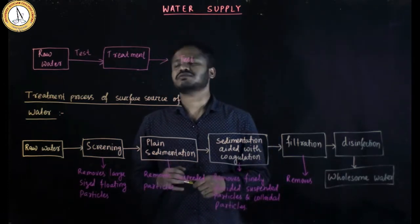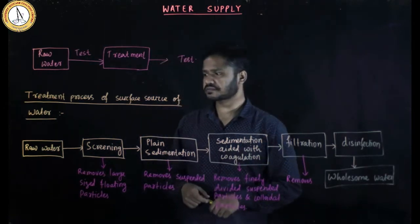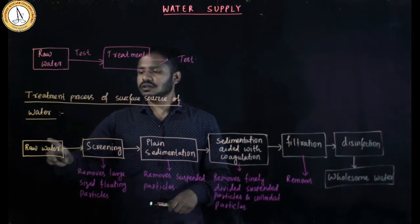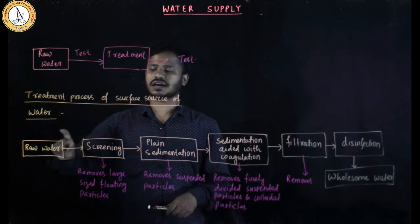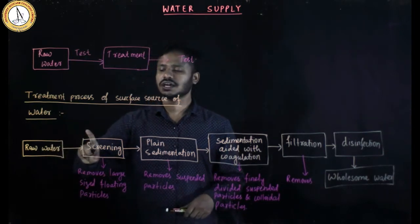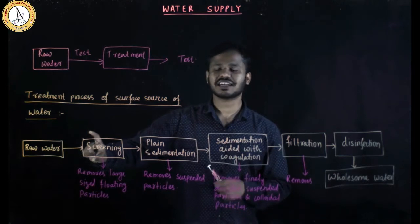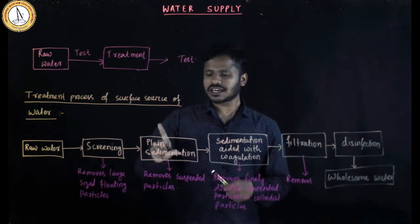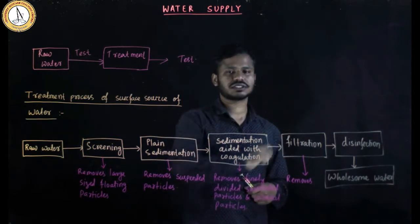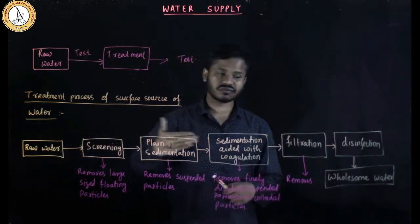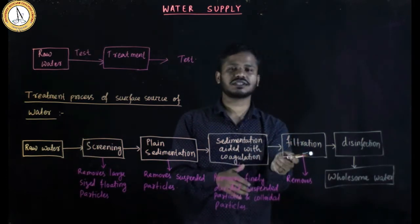For surface sources of water, the treatment process begins with raw water collection. The first step is screening, then plain sedimentation, followed by sedimentation aided with coagulation, then filtration, and finally disinfection. This is the fixed flow — we cannot change the order of filtration and sedimentation with coagulation.